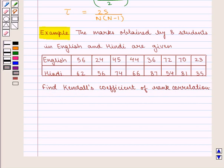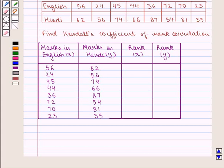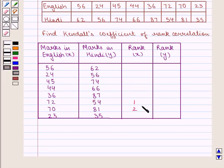Now let us find the ranks of 8 students in English and Hindi. We assign ranks from 1, 2, 3 and so on from the highest to the lowest. First we assign ranks to the marks in English: rank 1 to 72, rank 2 to 70, rank 3 to 56, rank 4 to 45, rank 5 to 44, rank 6 to 36, rank 7 to 24, and rank 8 to 23.